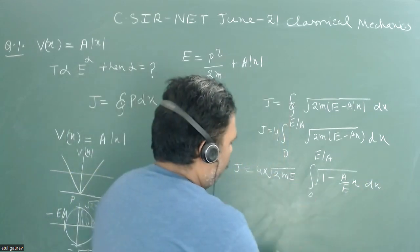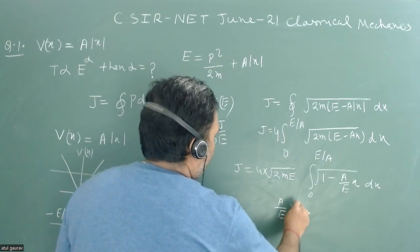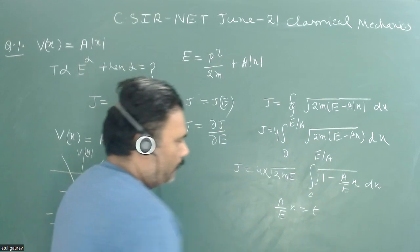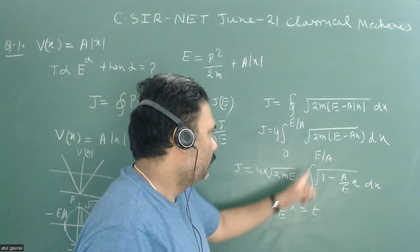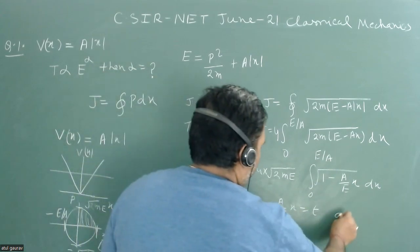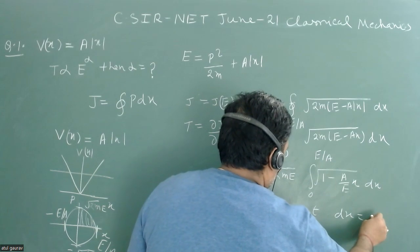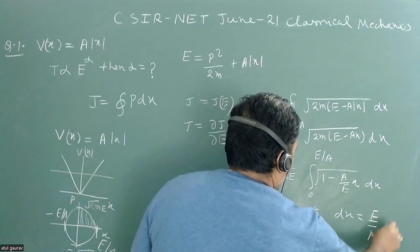And what we will do, we will just put a upon E into x equals t, such that when x equals 0, t equals 0, and when x equals E by a, t equals 1. And from here we can get dx equals E by a into dt.